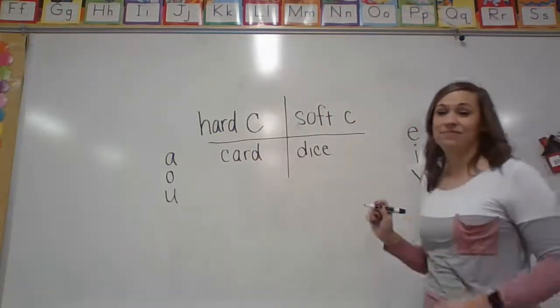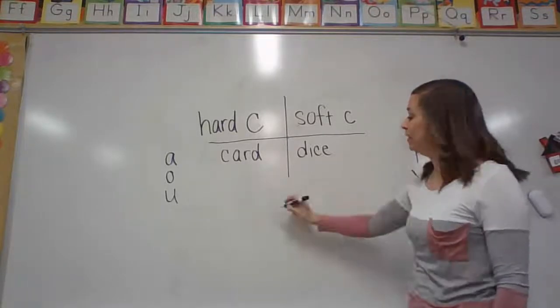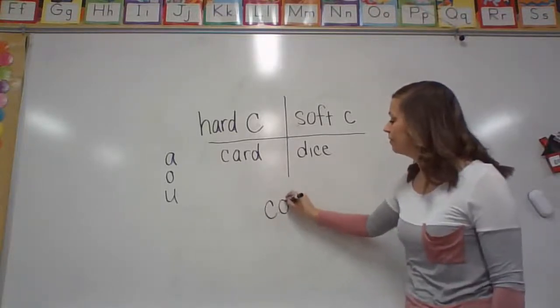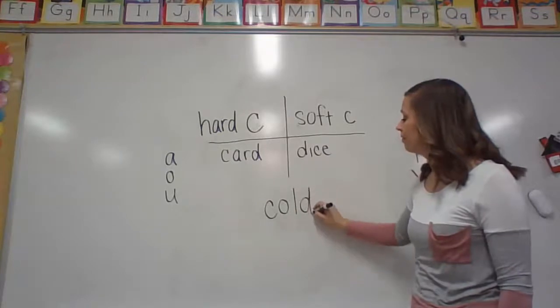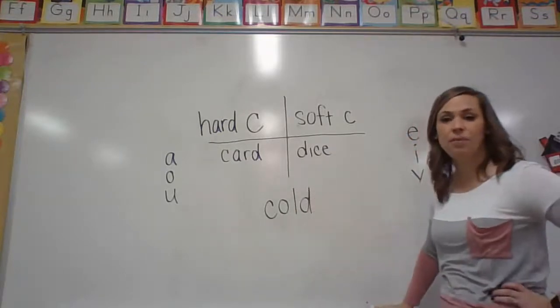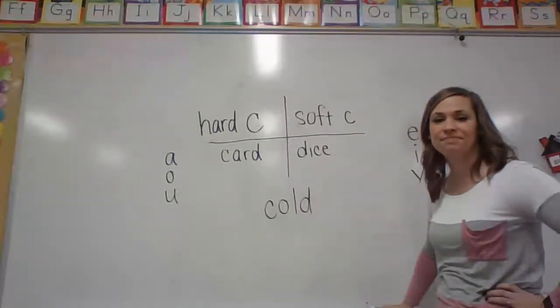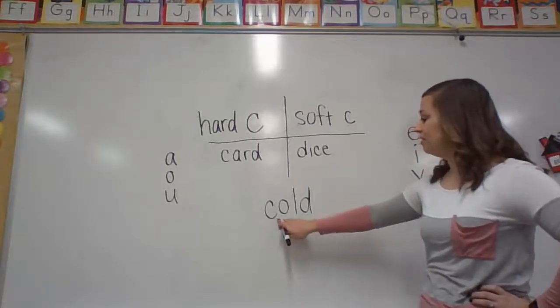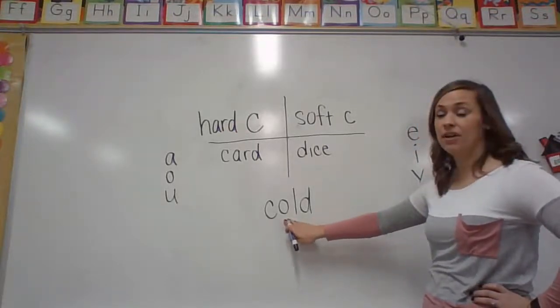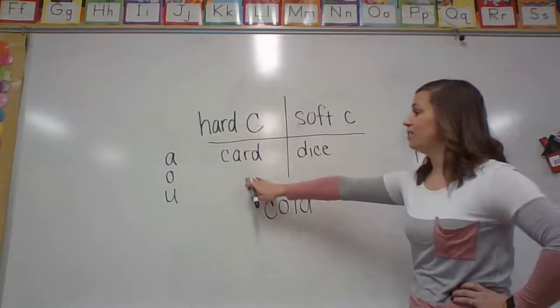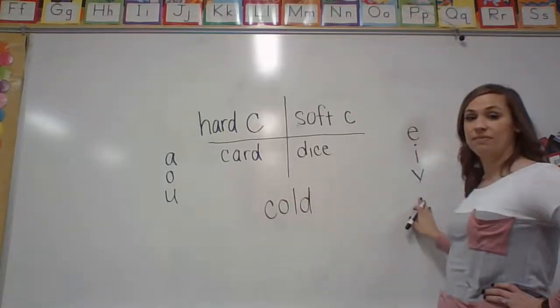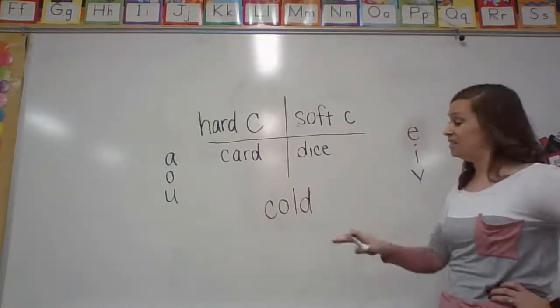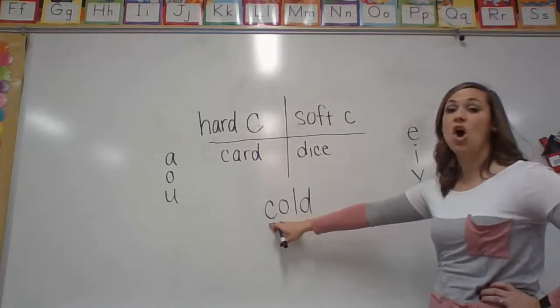Your next word is going to be this word. I feel like this is a very appropriate word for today. So you find your C. What letter is after it? All right. Oh, is that under hard C or soft C? It's under hard C. So this is going to say K.